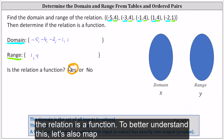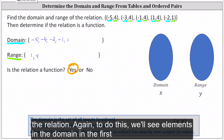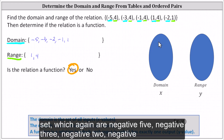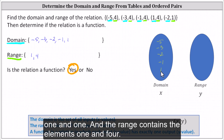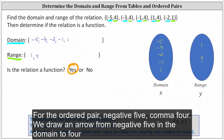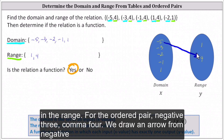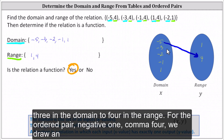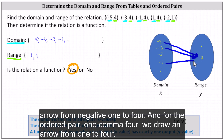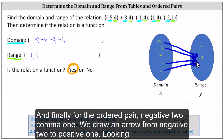To better understand this, let's also map the relation. We list the elements in the domain in the first set — negative five, negative three, negative two, negative one, and one — and the range contains the elements one and four. For the ordered pair negative five comma four, we draw an arrow from negative five to four. For negative three comma four, we draw an arrow from negative three to four. For negative one comma four, we draw an arrow from negative one to four. For one comma four, we draw an arrow from one to four. And finally, for negative two comma one, we draw an arrow from negative two to positive one.